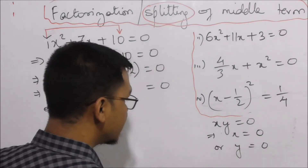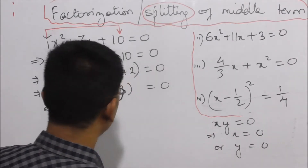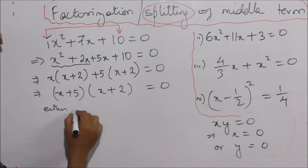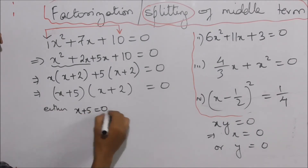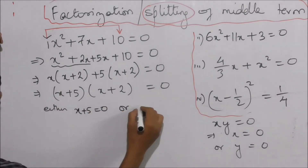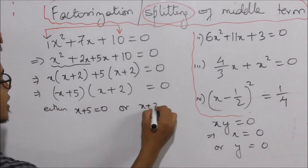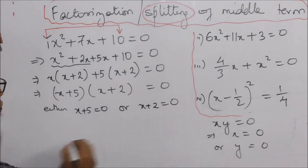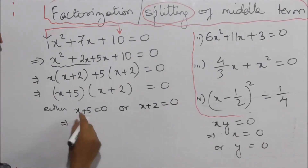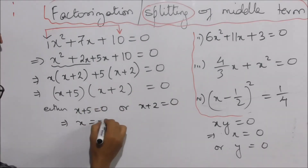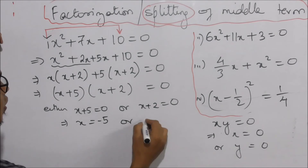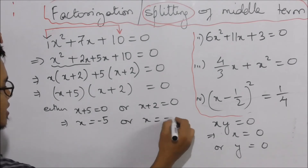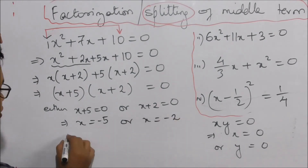So either x plus 5 is equal to 0 or x plus 2 is equal to 0. This gives x is equal to minus 5 or x is equal to minus 2.